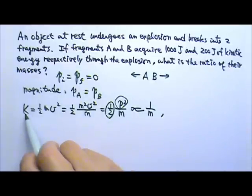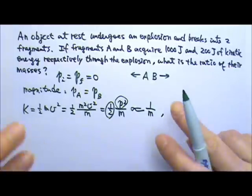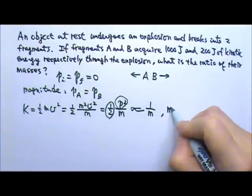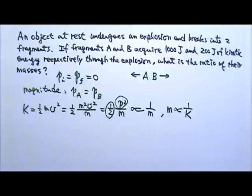This means kinetic energy is inversely proportional to mass. If I inverse both sides, mass is proportional to 1/K. So mass and kinetic energy are inversely related.